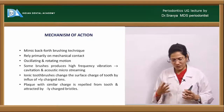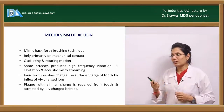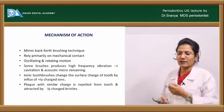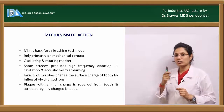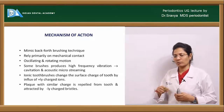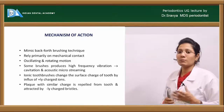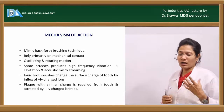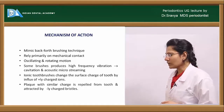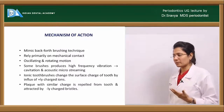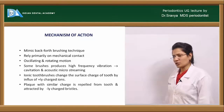The mechanism of action of powered toothbrushes: they mimic a back-and-forth brushing technique and rely primarily on mechanical contact. They usually have an oscillating or rotating motion. Some brushes produce high-frequency vibrations creating a cavitation effect and micro-acoustic microstreaming effect. Ionic toothbrushes change the surface charge of the tooth, causing the plaque — which carries the same charge — to be repelled from the tooth by the negatively charged bristles.